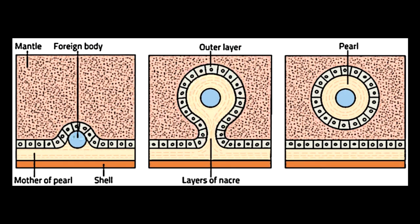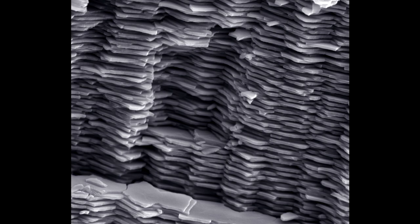Natural pearls are formed with no human interference whatsoever. They form when an injury happens to the mollusk's shell — an attack by a parasite or a fish. The injury and healing process produces a pearl sac or cyst. Afterwards, brick-like layers of microscopic aragonite platelets are secreted, forming the layers of nacre.